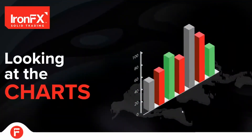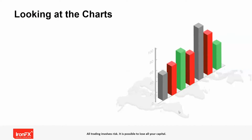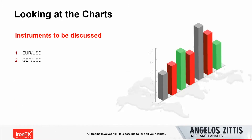Welcome back everyone, this is our Looking at the Charts report. My name is Angelo Zittes, and for this report we'll be looking at four instruments: first is EURUSD, second is GBPUSD, third is silver, and fourth is the S&P 500.